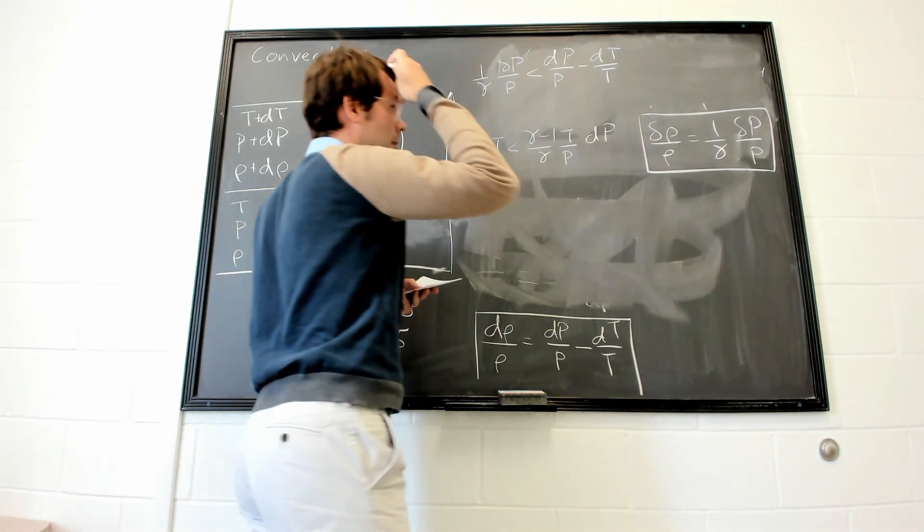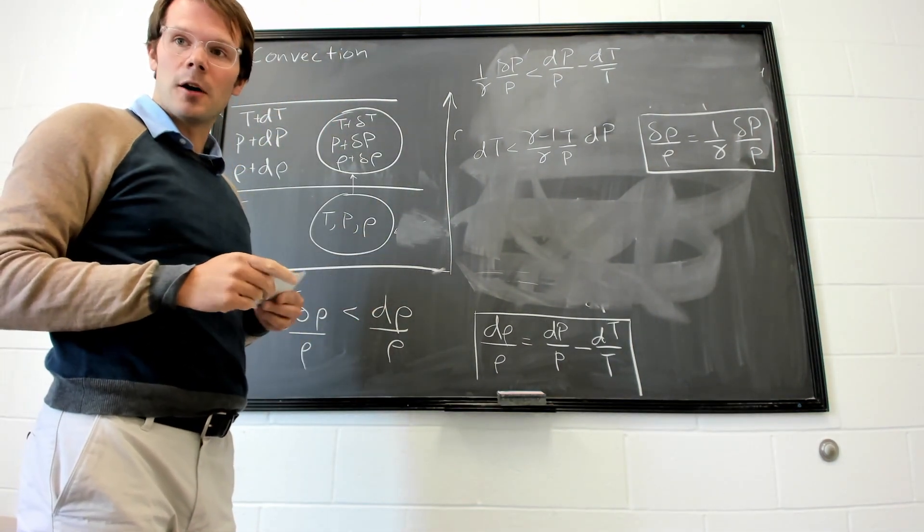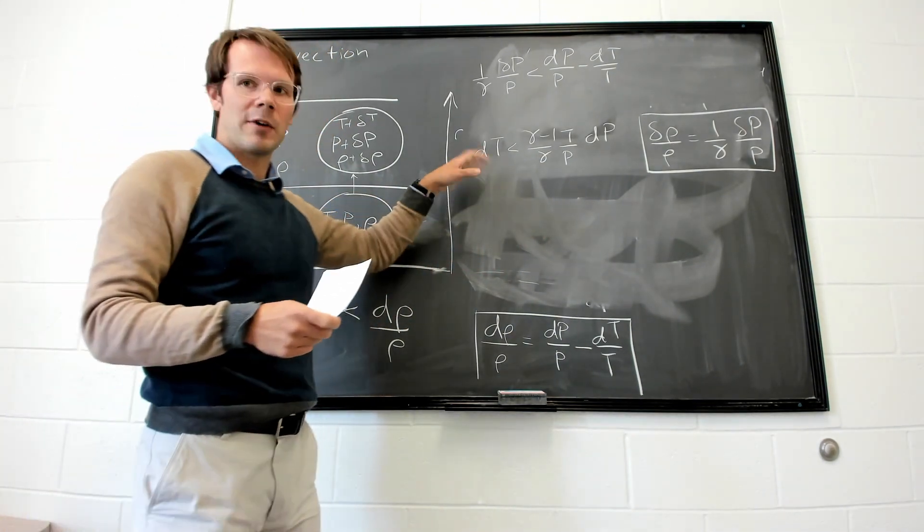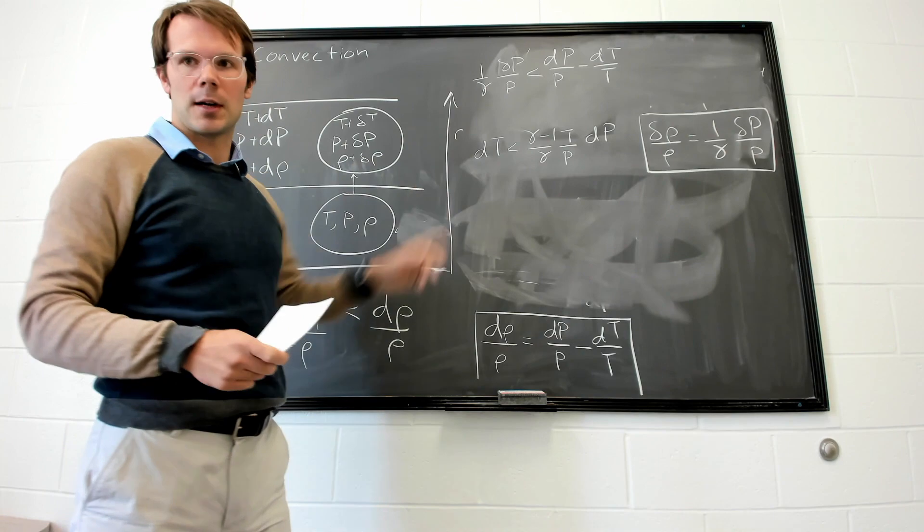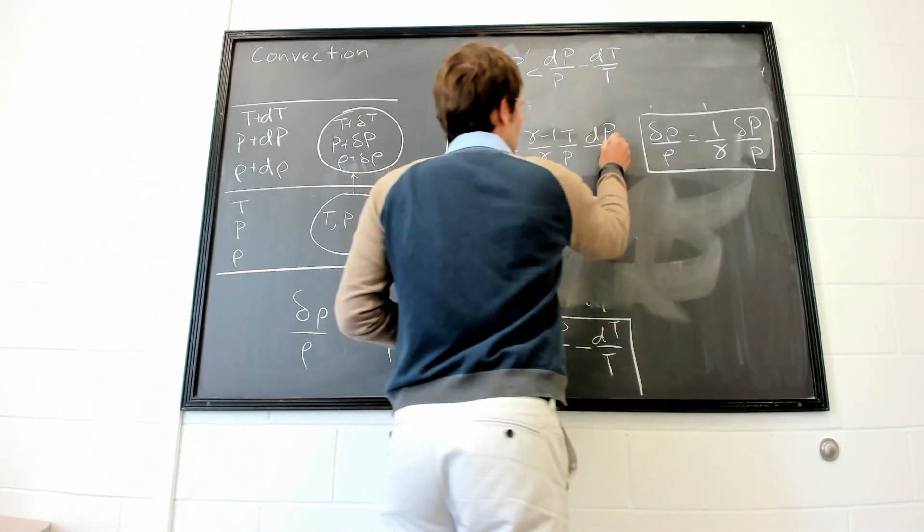And then we can divide both sides by dr. These expressions are correct, but what we really might want is a derivative or a gradient with respect to the radius inside the star. And we can do that just by dividing both sides by dr.